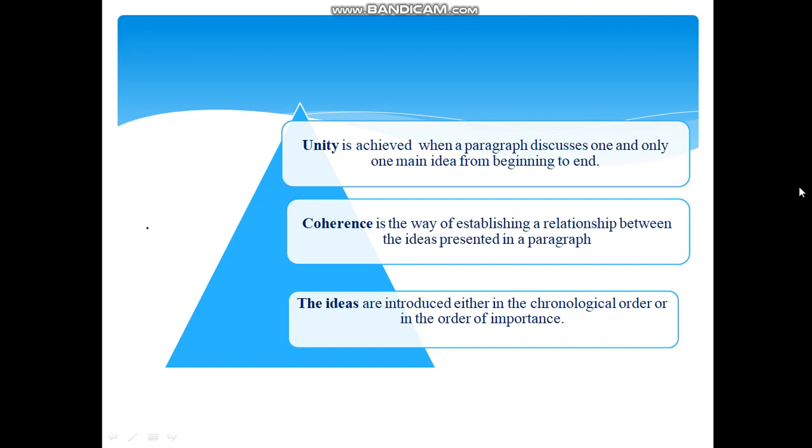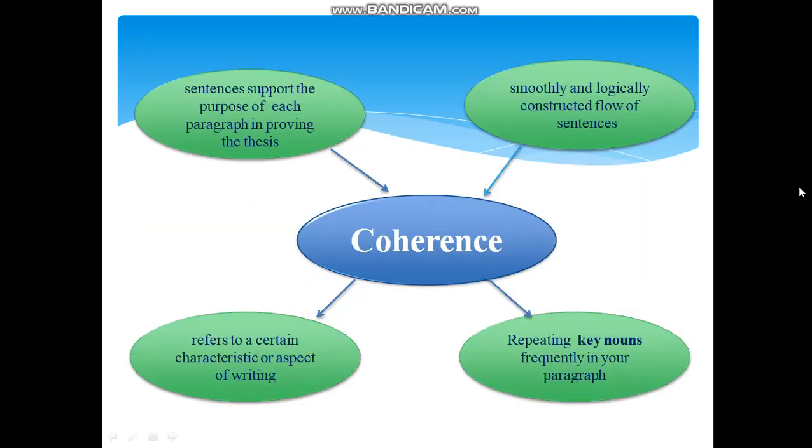The ideas are introduced either in the chronological order or in order of importance. What is coherence? Coherence, that is, sentences support the purpose of each paragraph in proving the thesis. Coherence, that is, smoothly and logically constructed flow of sentences. Coherence refers to a certain characteristic or aspect of writing. And coherence is repeating key nouns frequently in your paragraph.